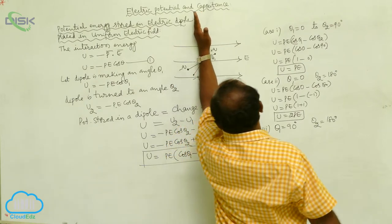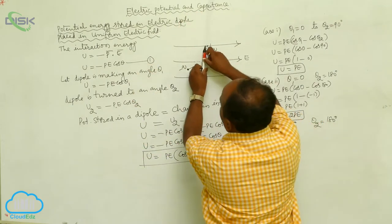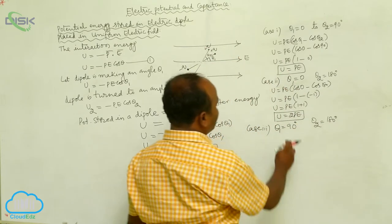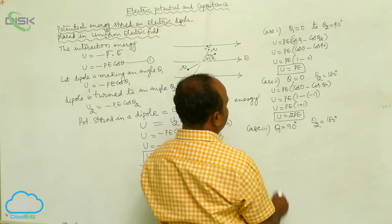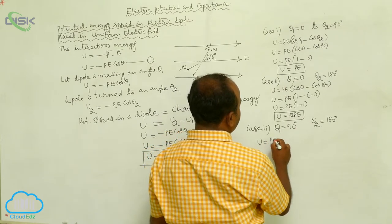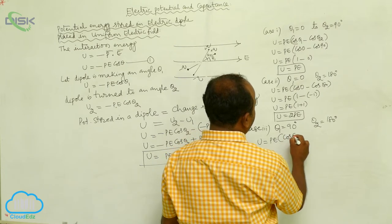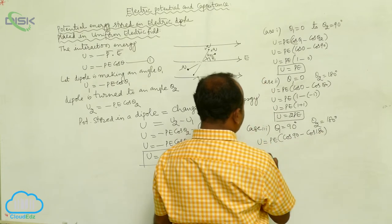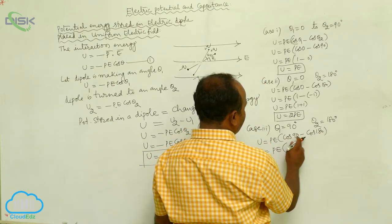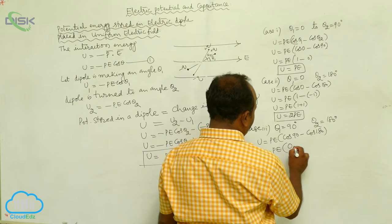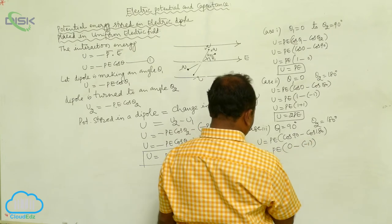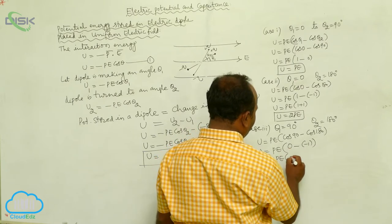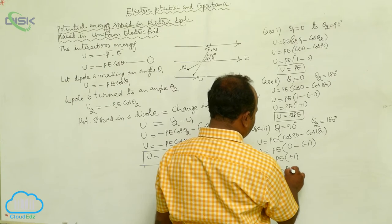The dipole is turned from this position to this position. Therefore, potential energy U = Pe(cosθ₁ − cosθ₂) = Pe(cos90° − cos180°) = Pe(0 − (−1)) = Pe(0 + 1). Therefore U = Pe.